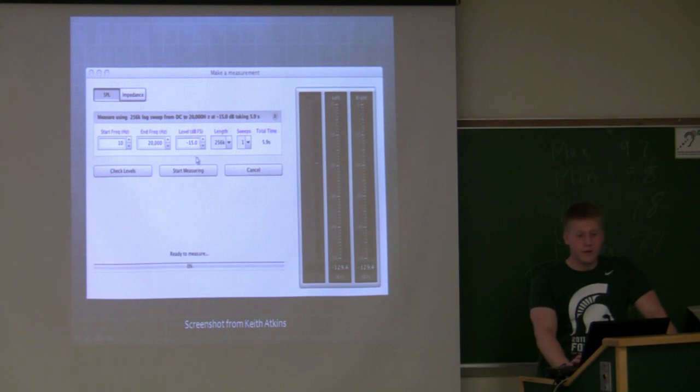This is the sound pressure level in decibels that you'll be sweeping at. Negative 15 is common, negative 12 is also good. This is the length of the sweep. You can do 512k for a little longer sweep. And the number of sweeps you want to do per measurement, and then the total time that that sweep will take.